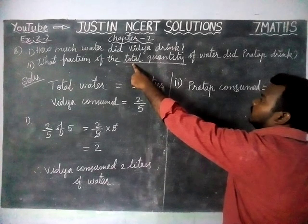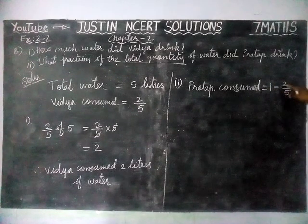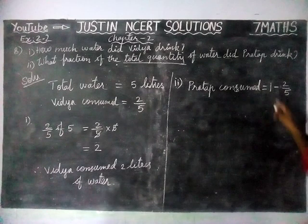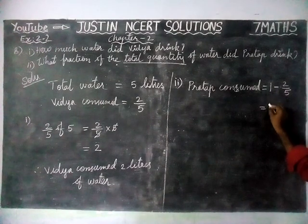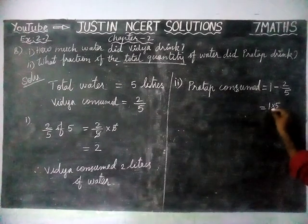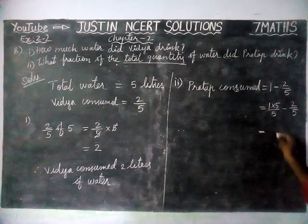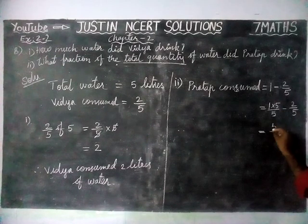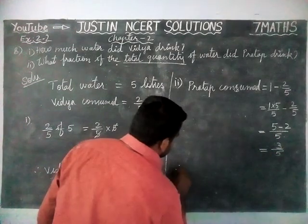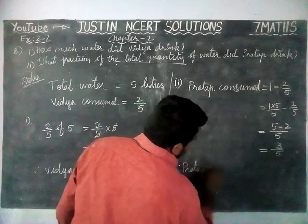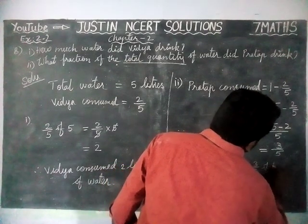Because they have given the total quantity of water, we have taken the total quantity equal to 1 water bottle minus Vidya's consumed water, which equals Pradha's consumed water. This is not a like fraction, so we are going to convert it into like fractions by multiplying 1 by 5 over 5, giving us 5 by 5 minus 2 by 5. Now denominators are common, so 5 minus 2 equals 3 divided by 5. Therefore, Pradha consumed 3 by 5 of the water.